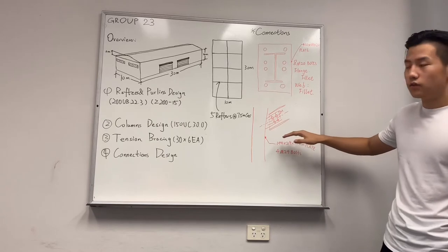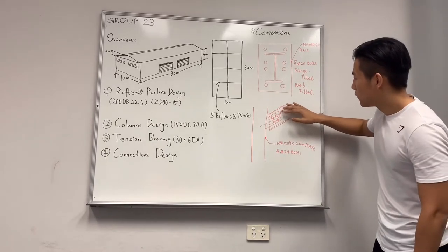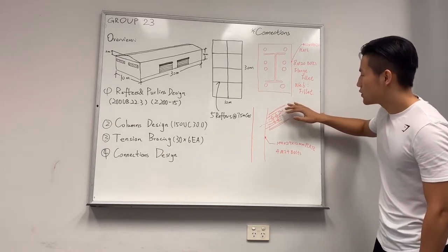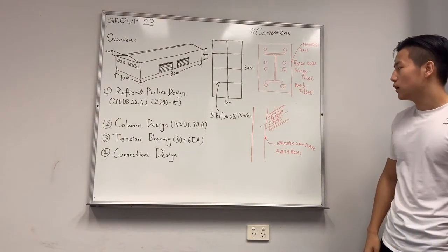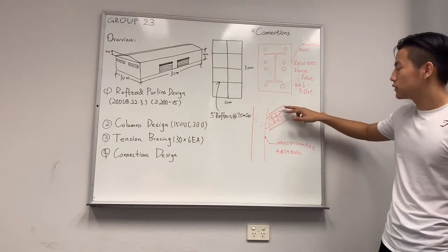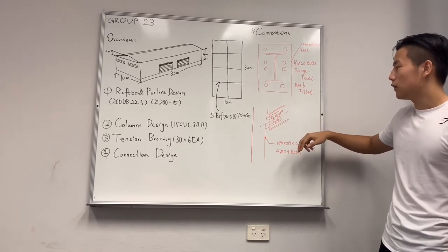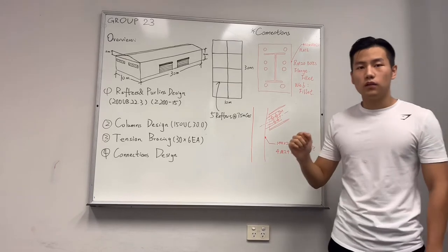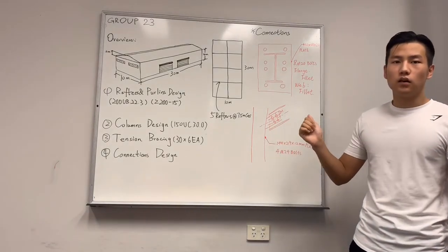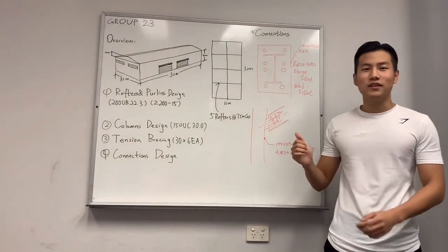During the calculation, the edge from bolt to the edge is not okay, so we increased it to 37, and after the calculation, it was acceptable. All our aim is to make it safety and economic. So thanks for taking time to view our presentation.